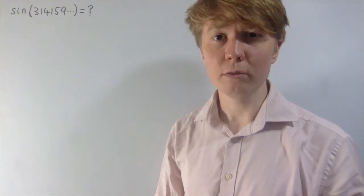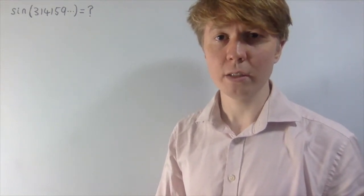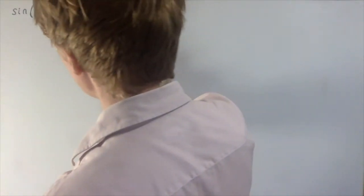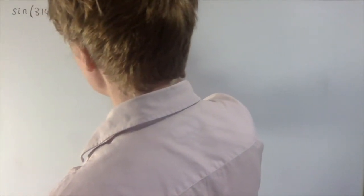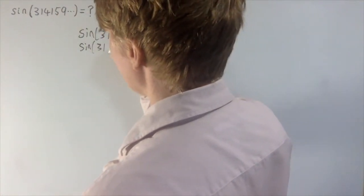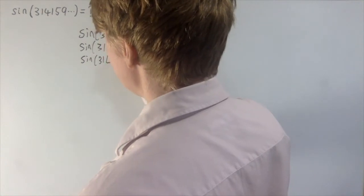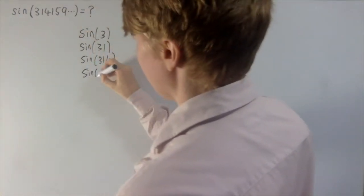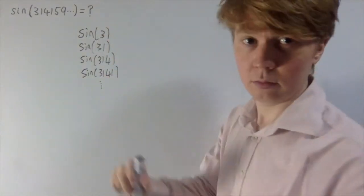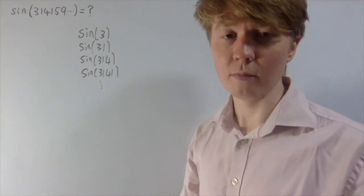We're going to look at a problem where you're working in radians. You start with sine of 3, then sine of 31, then sine of 314 — at each step you add another digit of pi and calculate the sine of that value in radians. So sine of 3141, and so on. We're interested in: is there a limit to this sequence? Does it converge, and if so, what does it converge to?